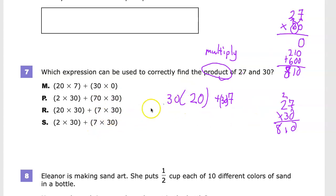So the answer choice that I'm going to choose is the one that has 20 times 30 and 7 times 30, just like I had here. So my answer for this one is R.